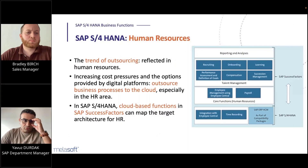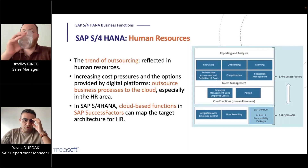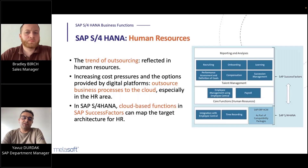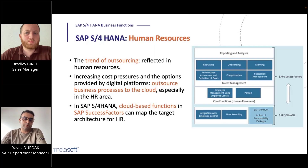The other core business area is human resources, where the major trend is outsourcing. This is driven by increasing cost pressures and the options provided by digital platforms. Outsourcing HR business processes to the cloud is increasingly required by the market. In SAP S4 HANA, cloud-based functions combined with SAP SuccessFactors match these requirements.